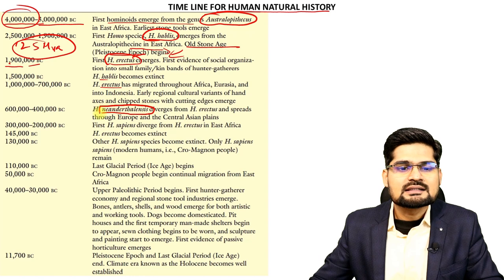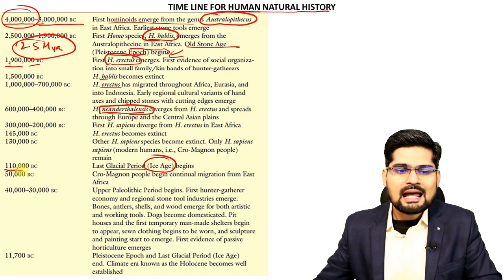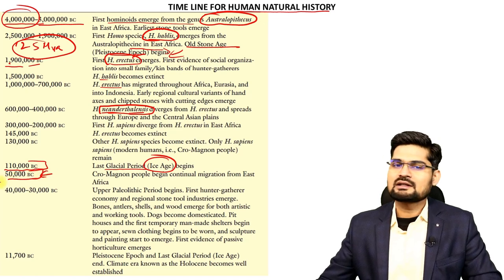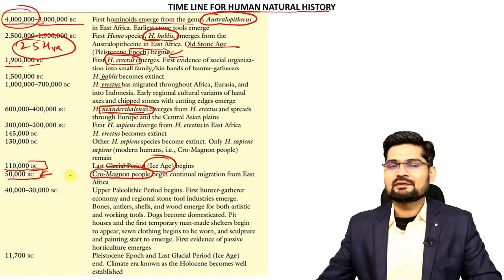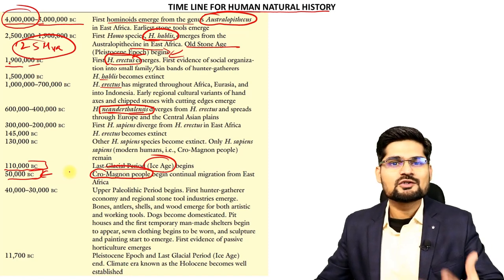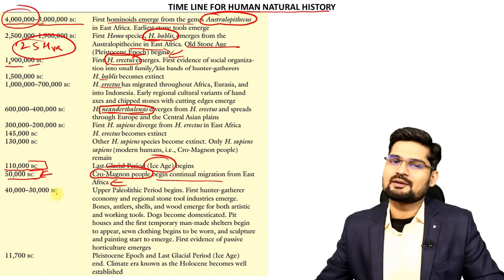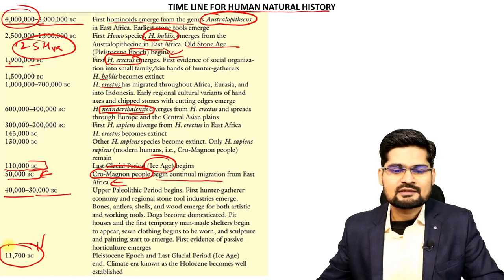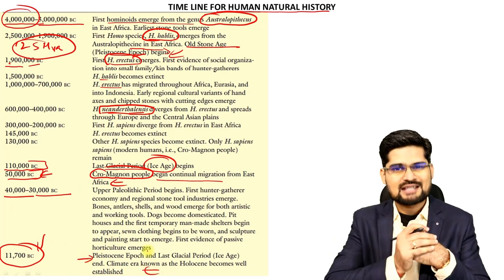From Homo erectus, the lineage progresses to the Neanderthals. Then we observe the last glacial period, where the ice age begins around 110,000 BCE. From 110,000 to 50,000 BCE, the Cro-Magnon people appear — representing the advent of modern humans — who began migrating from East Africa. This continues until 11,700 BCE, the end of the Pleistocene, by which time climate change was firmly established.